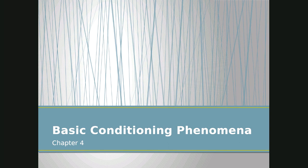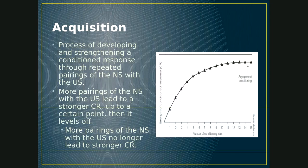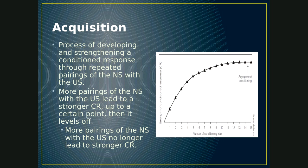Last week we had an introduction to classical conditioning, and in this mini lecture we'll talk more about some of the basics of classical conditioning. We'll start by discussing the acquisition phase, where your conditioned response is getting stronger because of repeated pairings of the NS and the US. Each time the neutral stimulus and the unconditioned stimulus are paired, your conditioned response will get stronger and stronger up to a certain point.